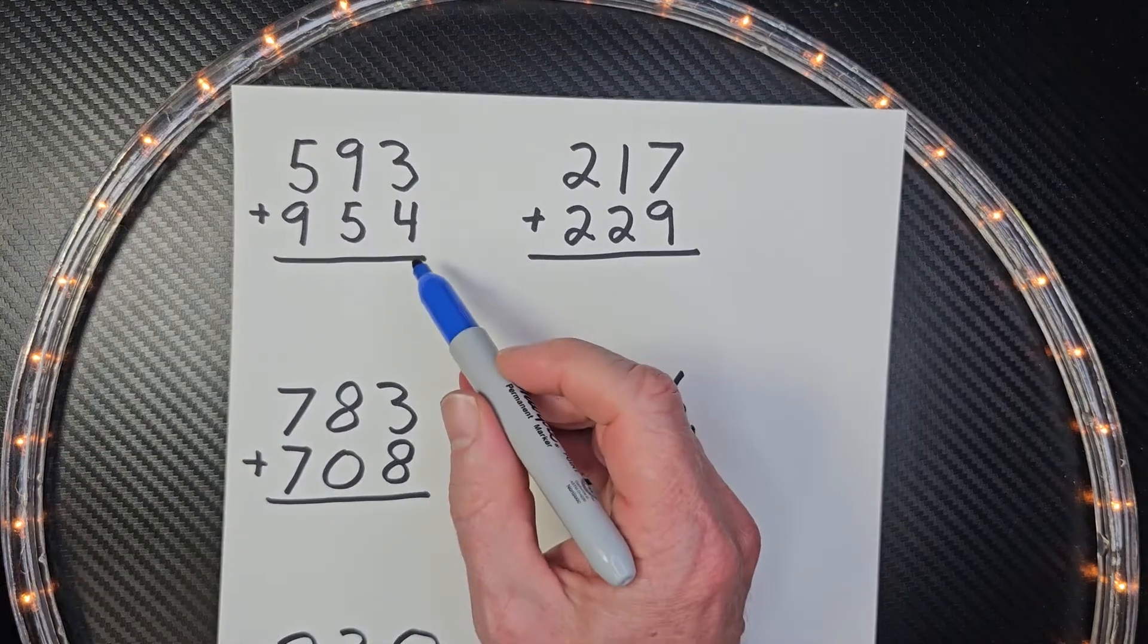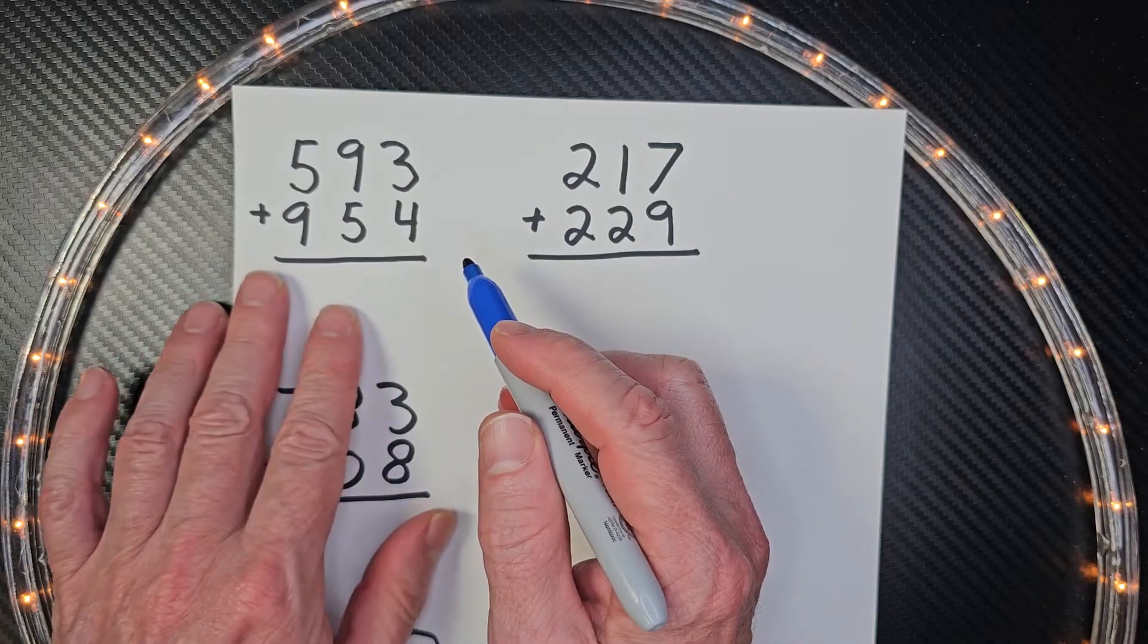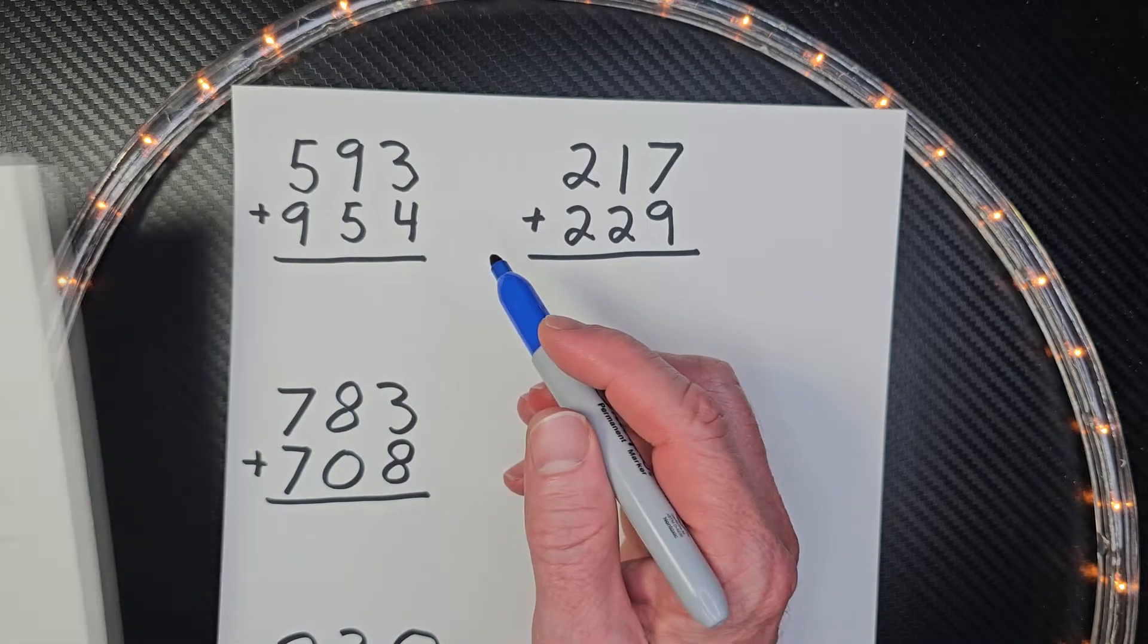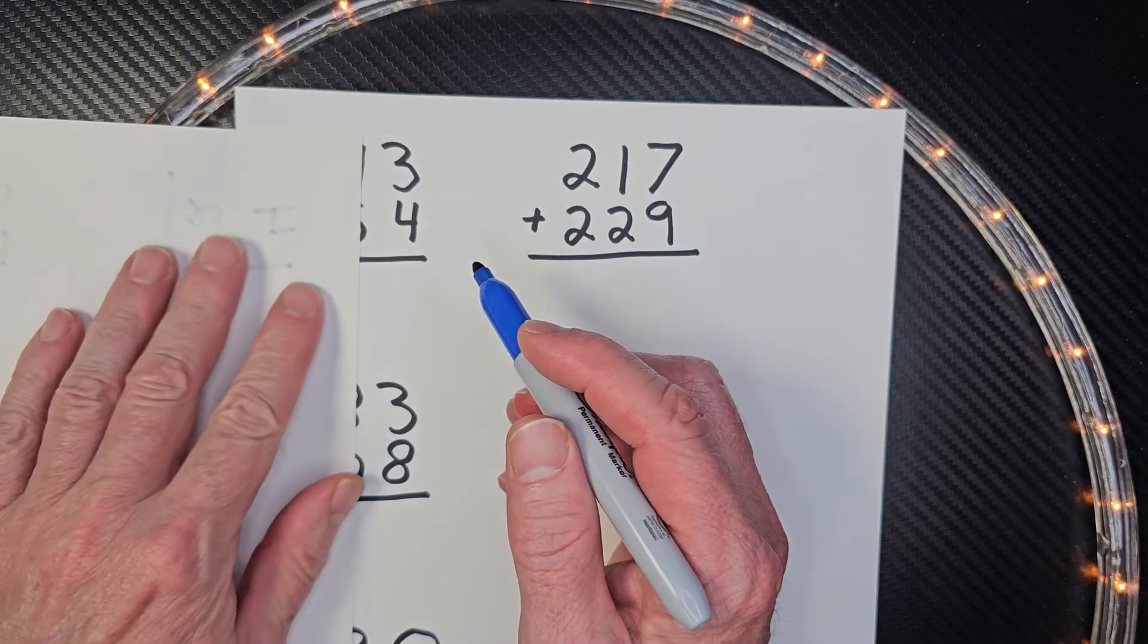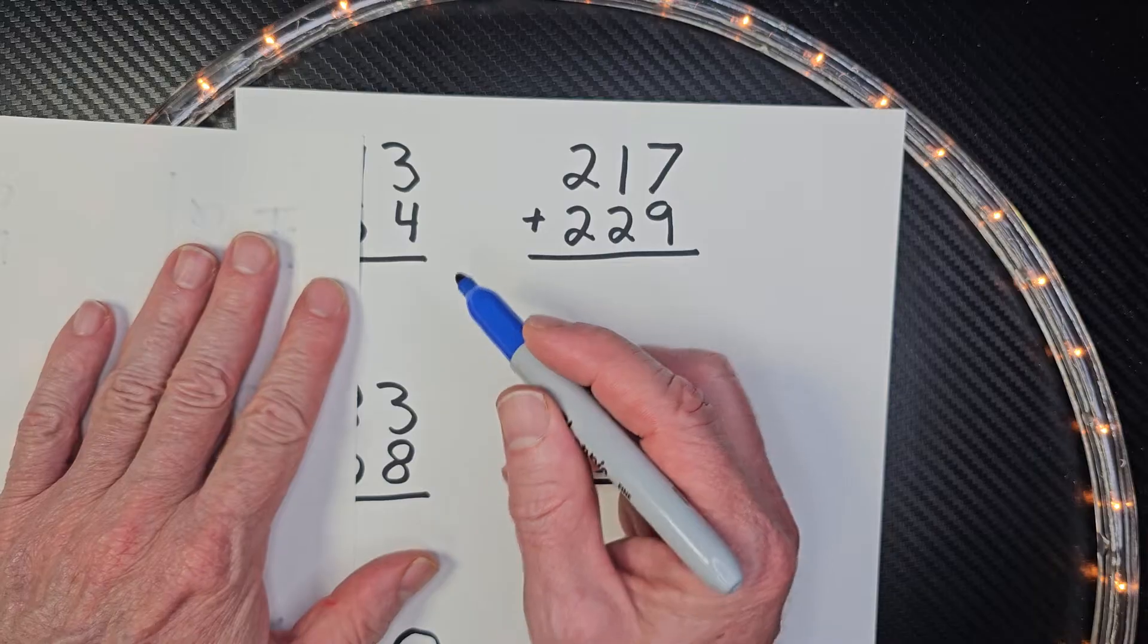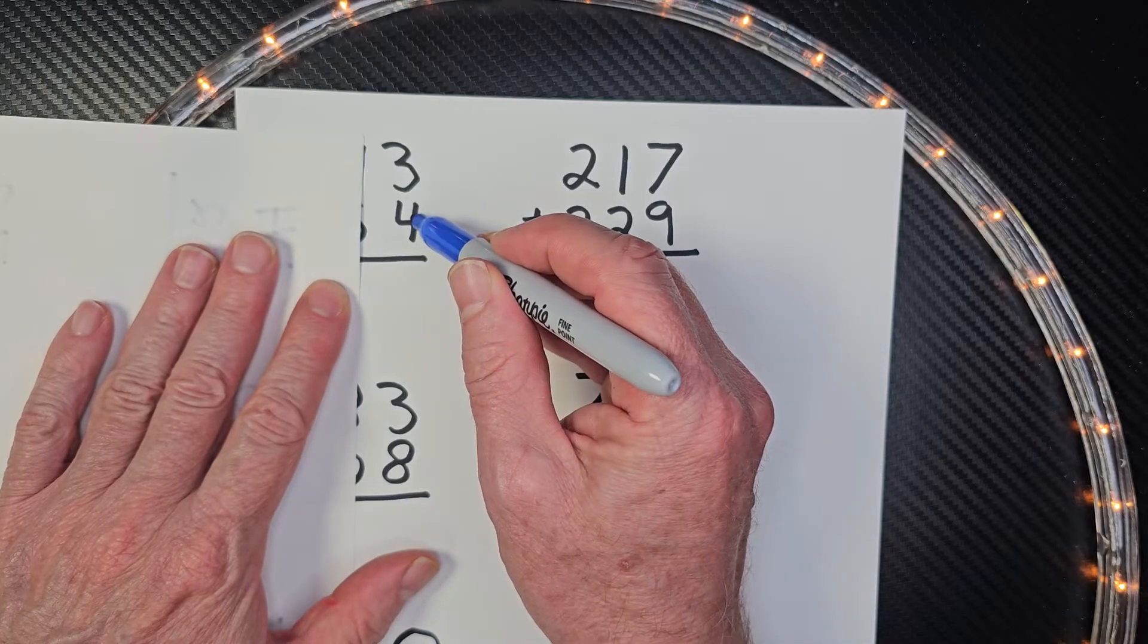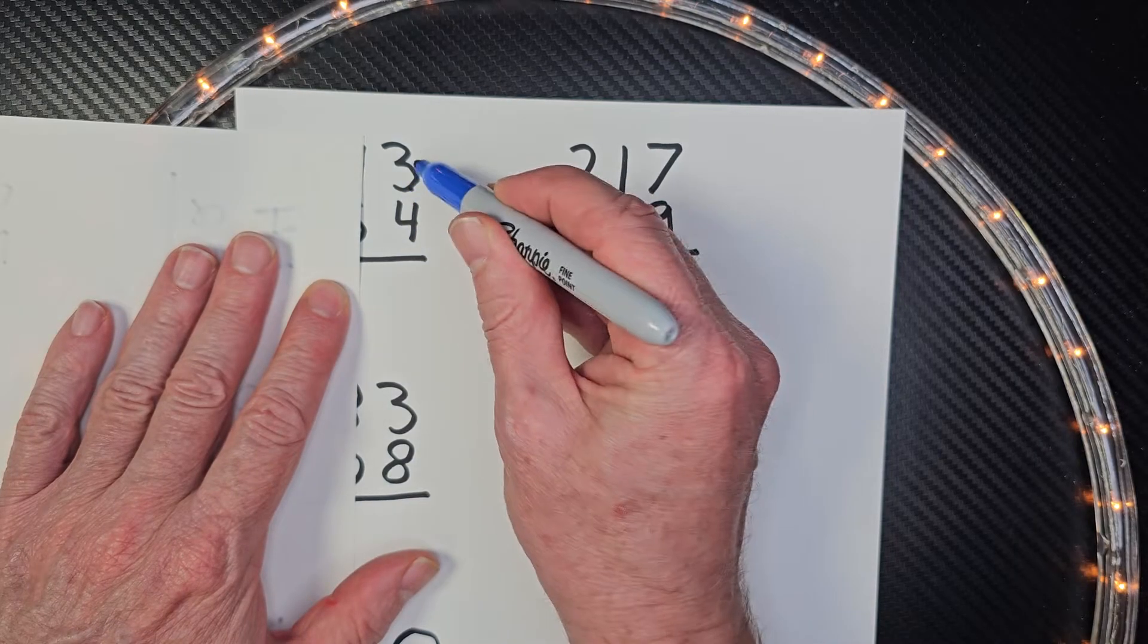Now, when we do problems like this, it gets a little confusing. There's a lot of numbers on here, so what we could do is just get a piece of scratch paper, put it over those numbers, and it's not too scary. So we can just go ahead and add this number: four, five, six, seven.